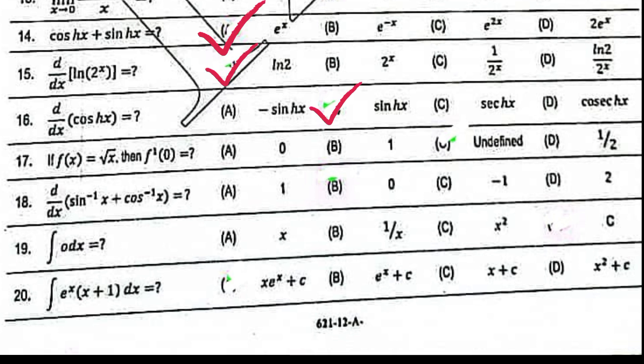If f(x) equal to under root x, then f prime 0 equal to undefined. D over dx sin inverse x plus cos inverse x equal to 0. Integration of 0 dx equal to c. Integration of e to the power x times (x plus 1) dx equal to x e to the power x plus constant of integration.